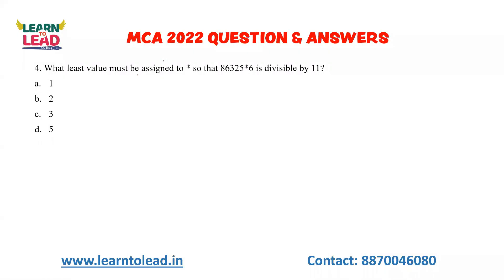Okay. Next question: what least value must be assigned to the star so that the number 8, 6, 3, 2, 5, star, 6 is divisible by 11? Apply the divisibility rule of 11 — alternate numbers at odd positions.